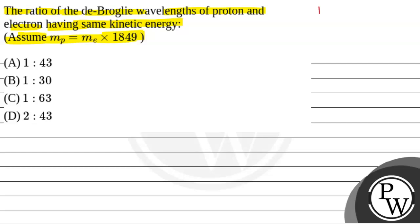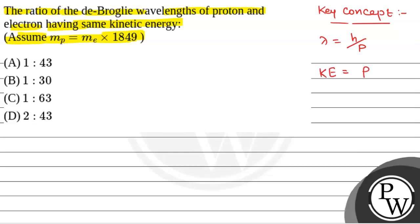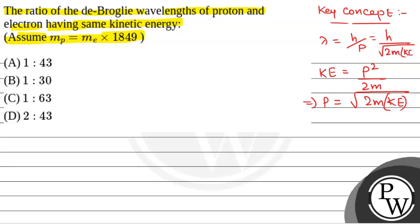We will solve this question. The key concept to solve this question is the de Broglie wavelength: lambda is equal to h by p, where h is Planck's constant and p is the momentum. We know that kinetic energy KE is equal to p squared by 2m, so from here we have p equal to root over 2m times KE. Therefore, lambda is equal to h by root over 2m into kinetic energy.